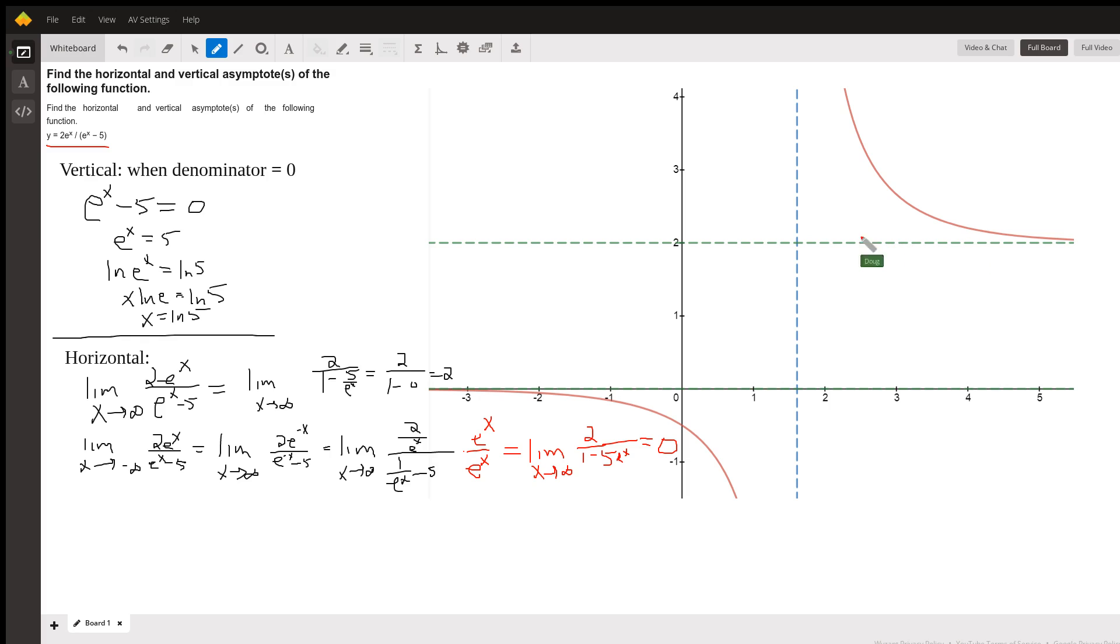The question is, how do we find them? Well, the vertical asymptotes occur when the denominator equals zero, in other words when the denominator is undefined. So we want to know when does xe^x minus five equal zero? We solve that by adding five to both sides.